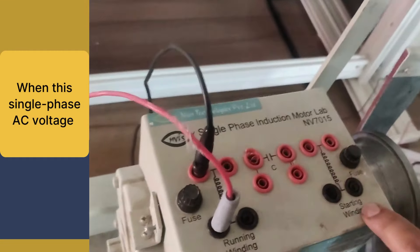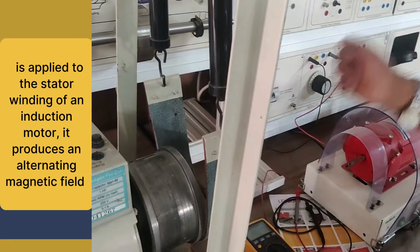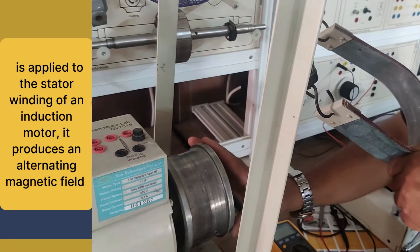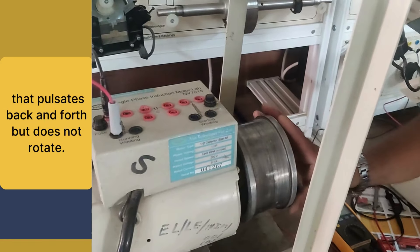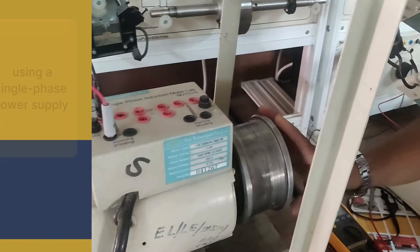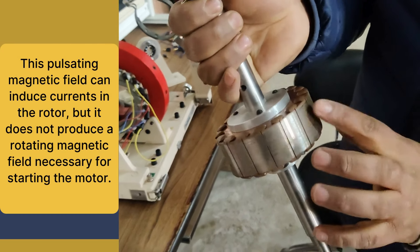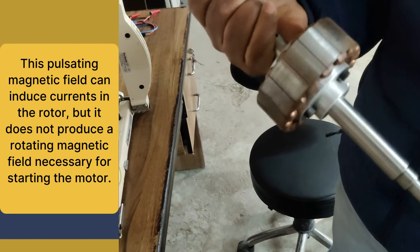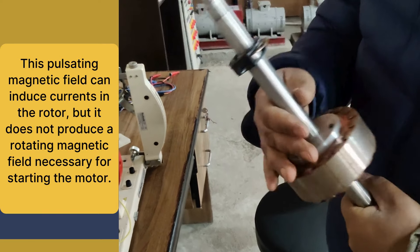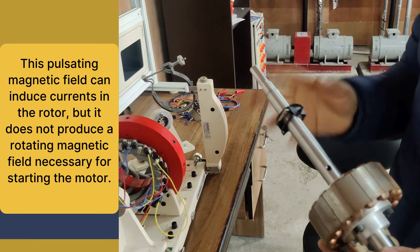A single-phase AC supply provides a single-phase sinusoidal voltage that oscillates over time. When this single-phase AC voltage is applied to the stator winding of an induction motor, it produces an alternating magnetic field that pulsates back and forth but does not rotate. This pulsating magnetic field can induce currents in the rotor, but it does not produce a rotating magnetic field necessary for starting the motor.